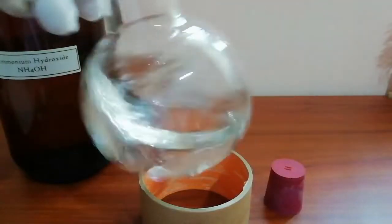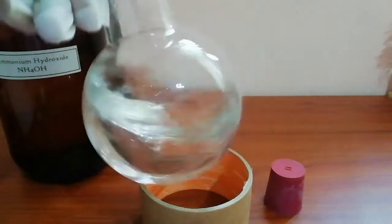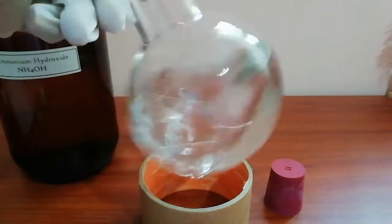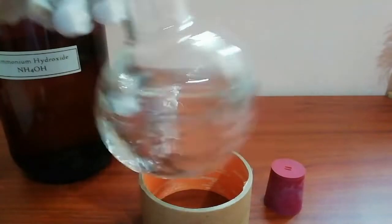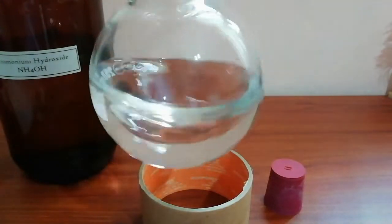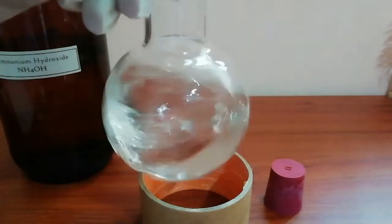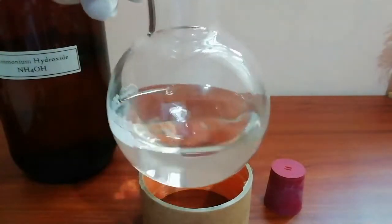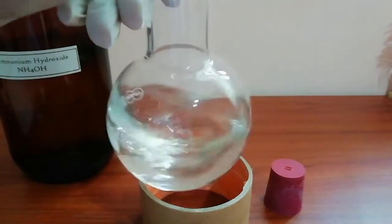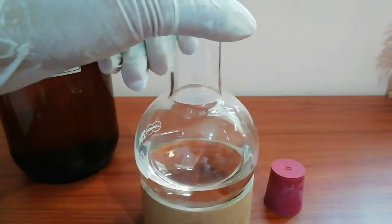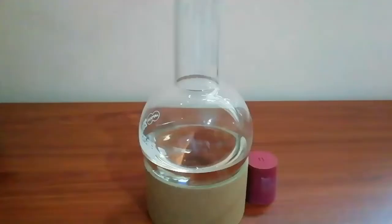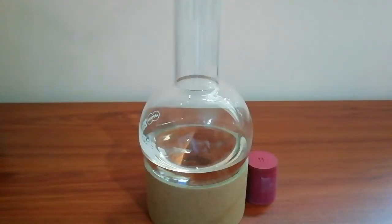Two milliliters of ammonia was not enough to dissolve all the silver oxide, so I add more ammonia until all the silver oxide dissolves. Now you have a nice clean solution. This mixture is called Tollens reagent.